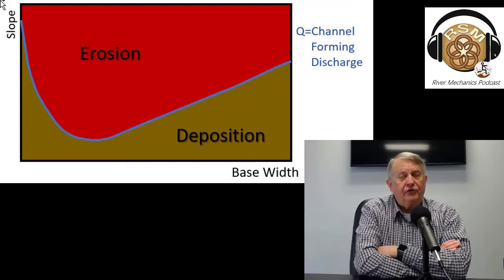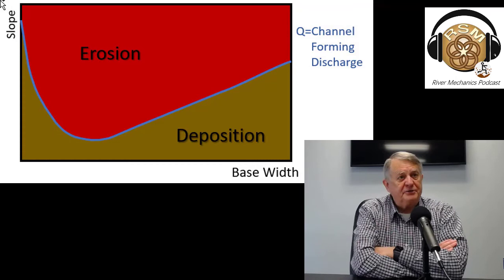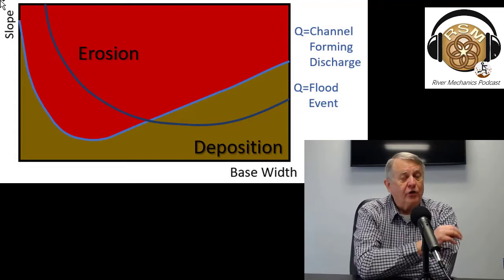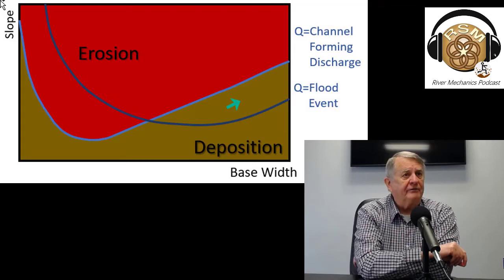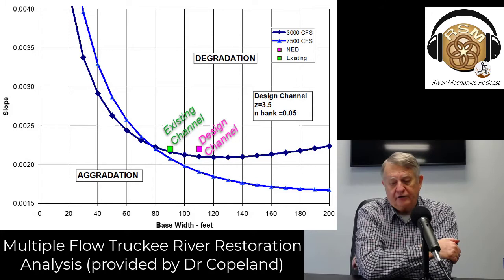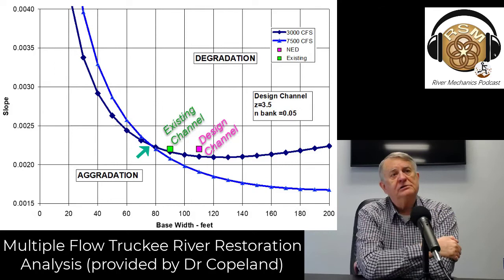When you're on that curve, what comes in is going out. That curve is based on a specific discharge — the channel forming discharge — but you can generate another curve for a flood event, a big flood, a little flood, or even low flow. It'll tell you whether, for a given discharge, you might get erosion even though you're stable at the channel forming discharge. If you have two discharges, there'll be one solution that satisfies both, because now you've added another equation.